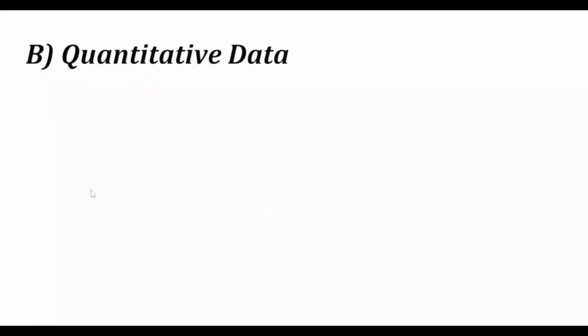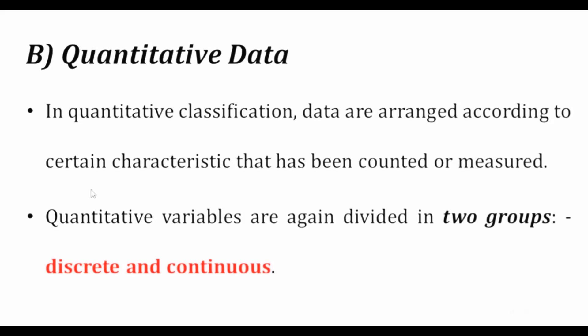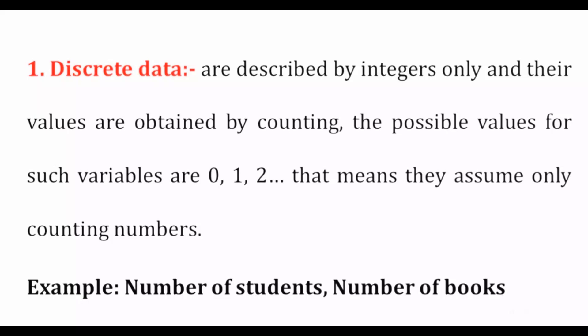Quantitative data is based on count and measurement. Quantitative variables are classified as discrete and continuous. Discrete data is described as integer numbers — the possible values are counts: 0, 1, 2, 3. For example, number of students or number of books are quantitative discrete variables.